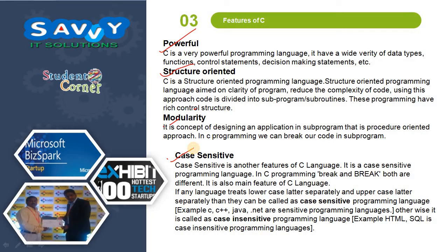Case sensitive is another feature of C language. It is a case-sensitive programming language. In C programming, BREAK and break — capital letter and small letter — are different. If any language treats lowercase letters and uppercase letters separately, it is called a case-sensitive programming language. Examples: C, C++, Java, and .NET are case-sensitive programming languages. Otherwise, it is called a case-insensitive programming language. Examples: HTML and SQL are case-insensitive programming languages.